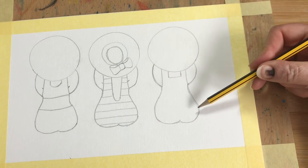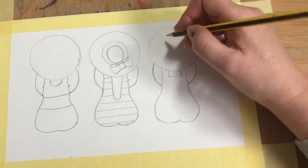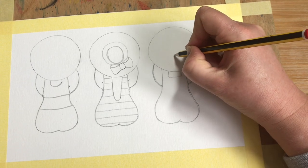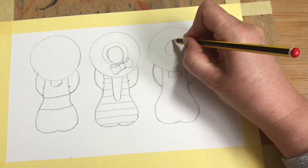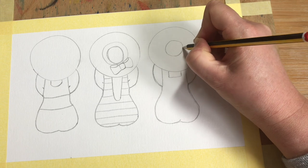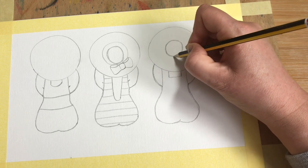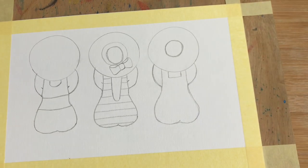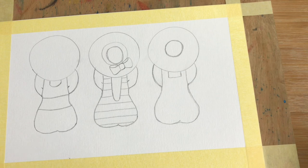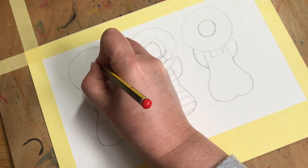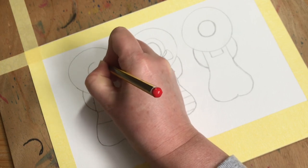Then we just need to just do a little circle within the hat, and we'll pop the ink details on that one in a little while. Let's do the same over here.